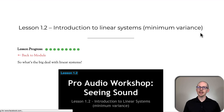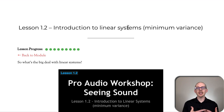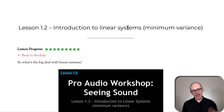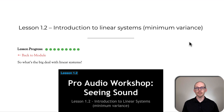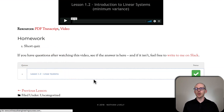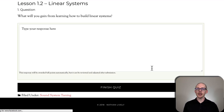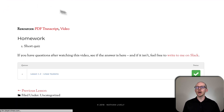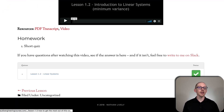Moving on to lesson two of module one: introduction to linear systems. This is basically the why of this entire course — we want to make sure that what we put into the system is what we get out of it, and that's what a linear system is. Here I'll also define minimum variance and some other important terms. At the bottom of each lesson is the homework, and sometimes the homework is a quiz or an essay like in this one, and sometimes you'll upload an assignment like a design you've been working on.